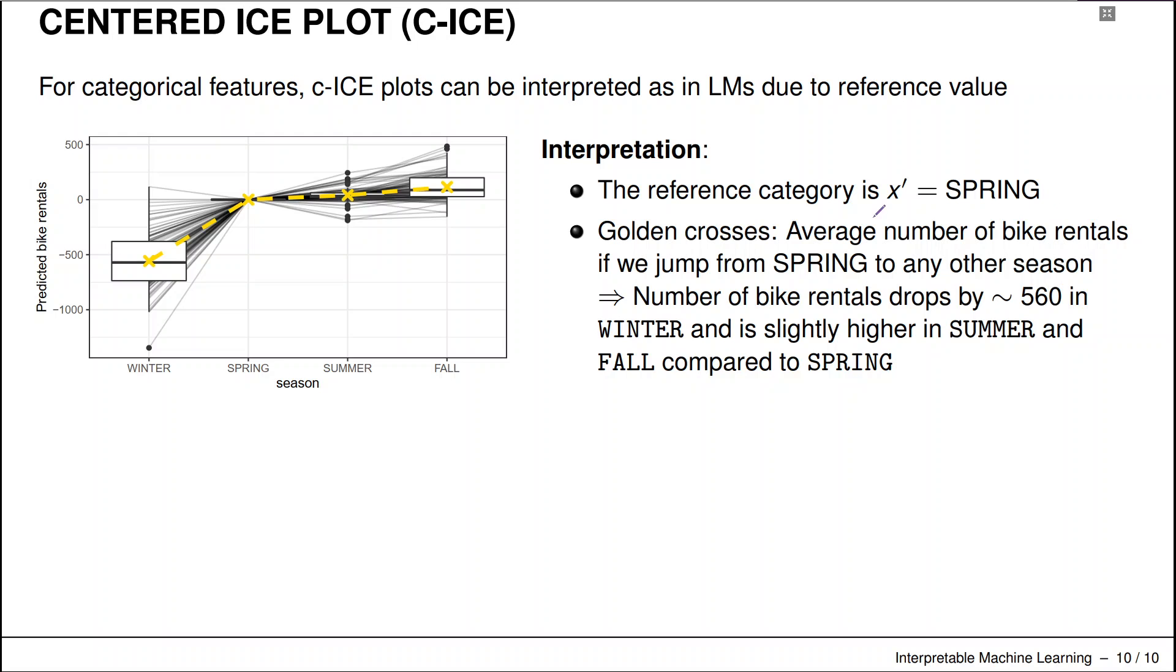So here we take the reference category spring for the feature season. So this guy here is our reference value. And these golden crosses now in our plot are the average number of bike rentals if we jump from spring to any other season. So for example, the number of bike rentals drops by approximately 500 to 600 in winter. So if we go from here to this guy, we have a drop in bikes relative to the season spring. So going from spring to winter, about 560 bikes less. And it's slightly higher in summer and fall if we again compare to this reference value. So thank you.